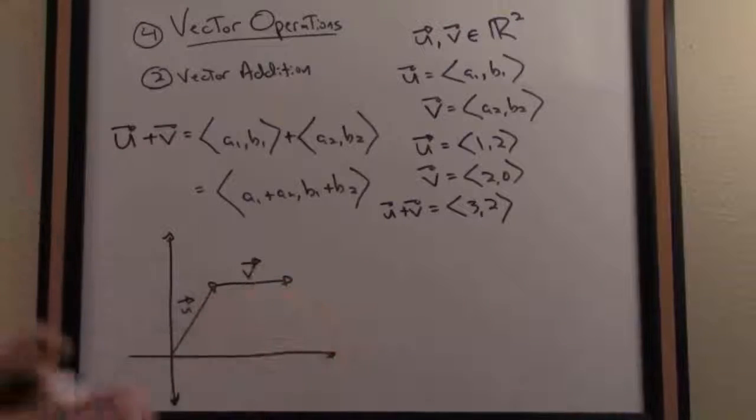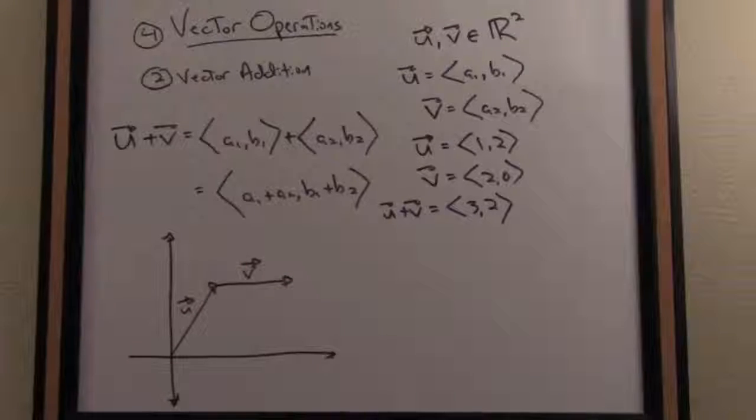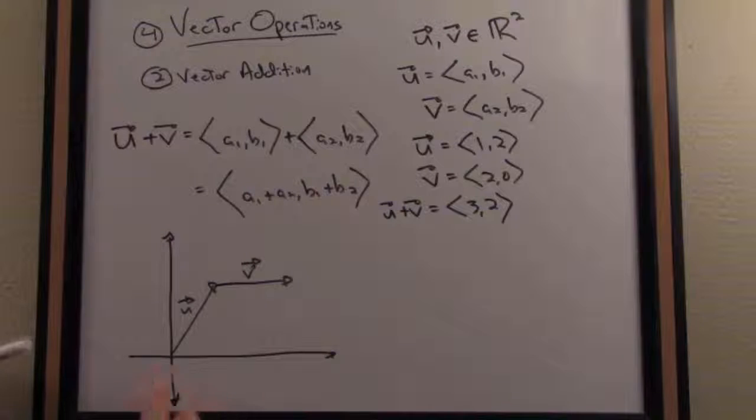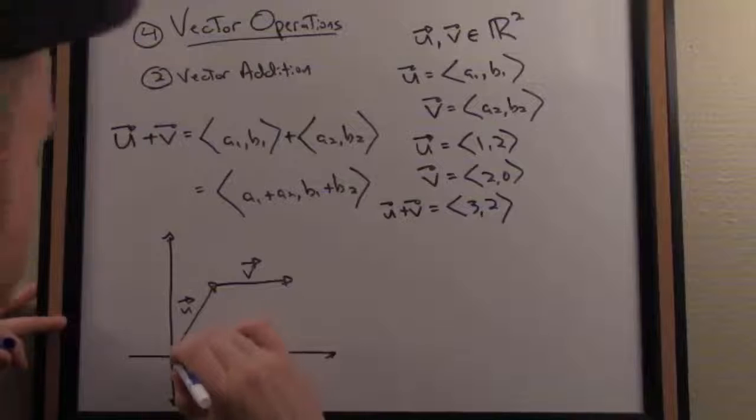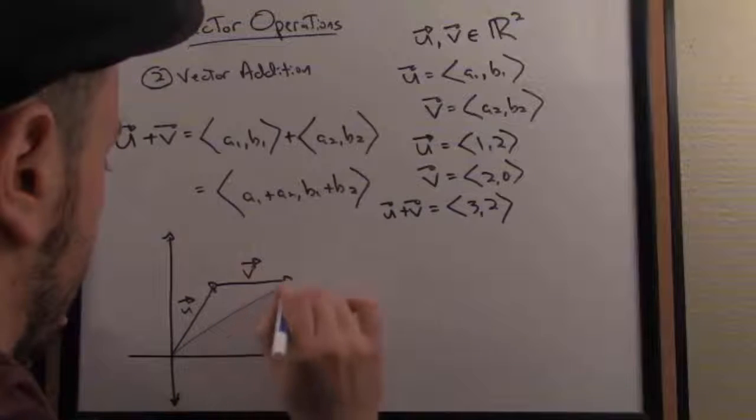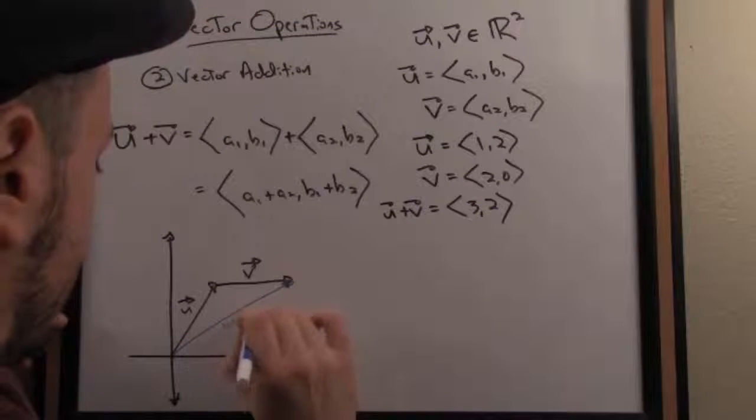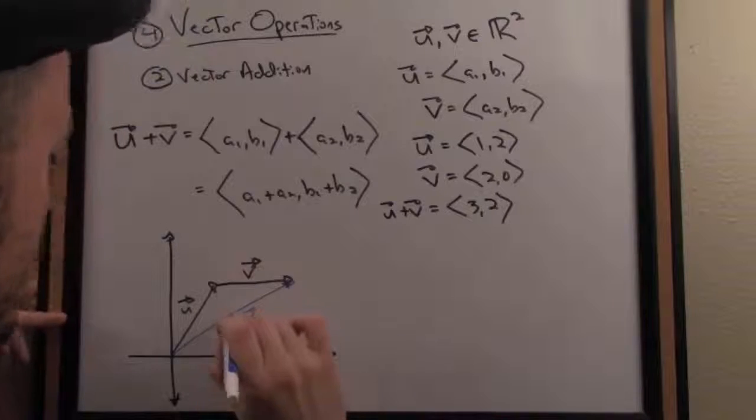So I'm going to align these with u first and then v. The resultant vector when I add these together has initial point that aligns with the initial point of the first vector u and terminal point that aligns with the terminal point of the second vector v. So in other words, that vector in blue is my resultant vector geometrically, u plus v.